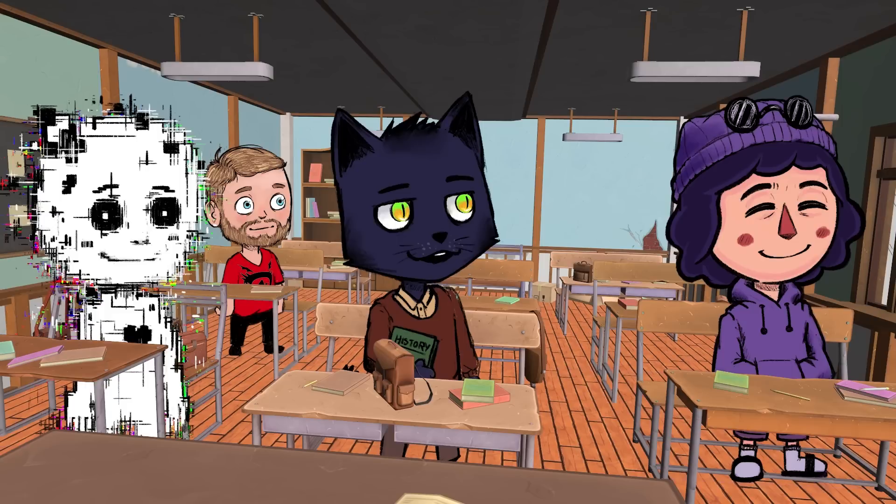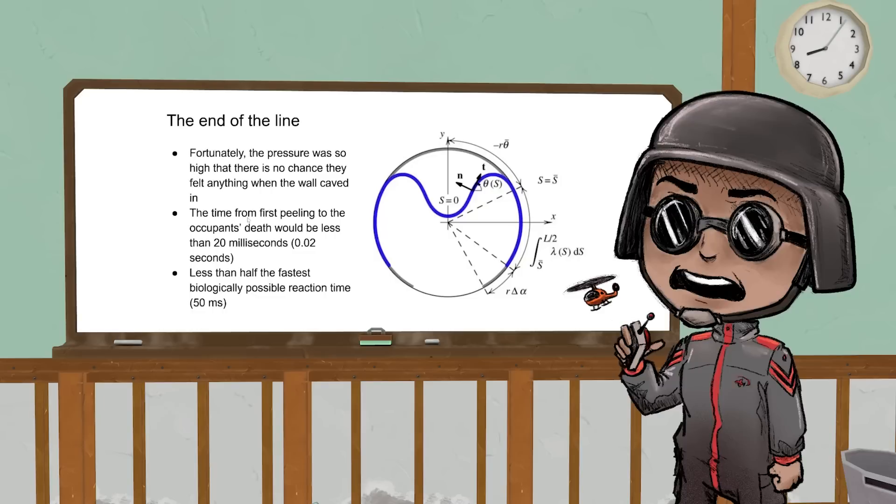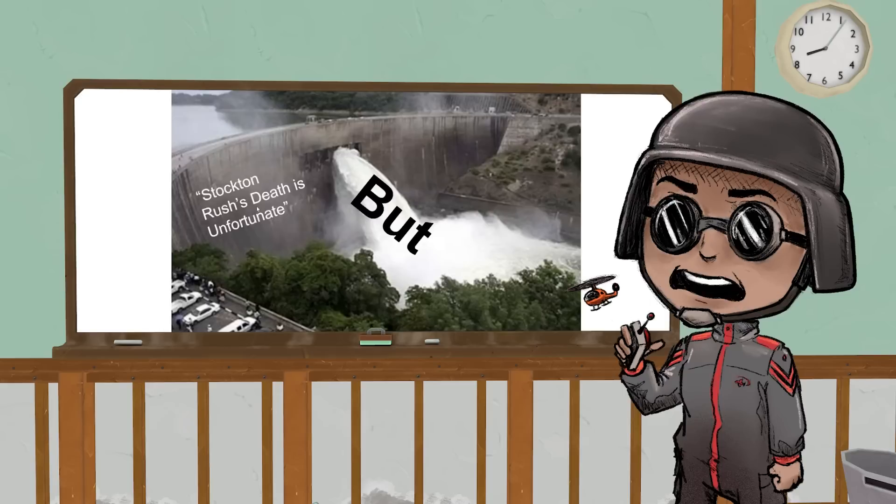If you blinked, you would have missed it. Put it this way: the time from peeling to death was 20 milliseconds. The fastest possible reaction time with computer assistance is 50 milliseconds, and that is as fast as is biologically possible. Less than half the time, they had already been instantaneously pulverized.